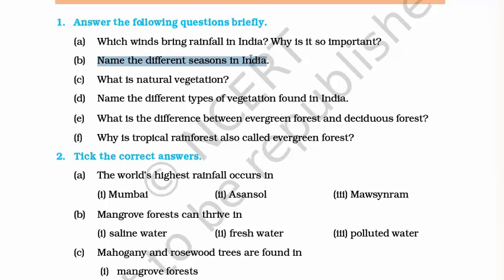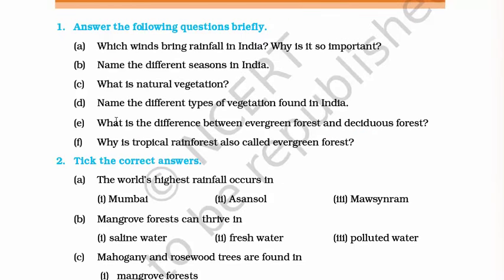Second question: name the different seasons in India. We have four official seasons — monsoon, autumn, winter and summer. Third question: what is natural vegetation? Natural vegetation includes all the forests, green plants, shrubs and trees that grow on their own in our country. Fourth question: name the different types of vegetation found in India — tropical rainforest, tropical deciduous forest, mangroves, mountain vegetation and thorny bushes.